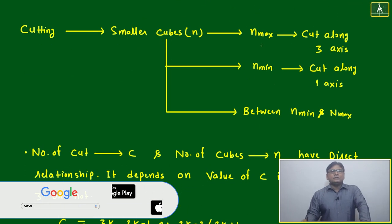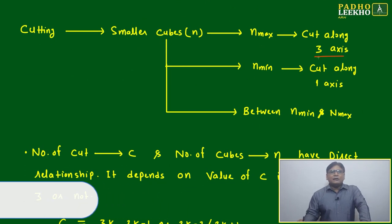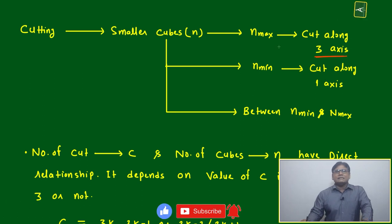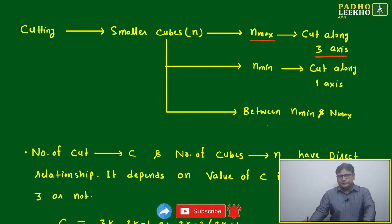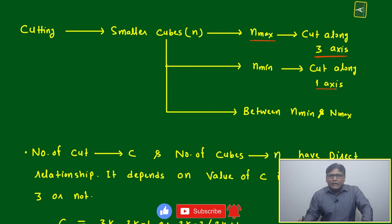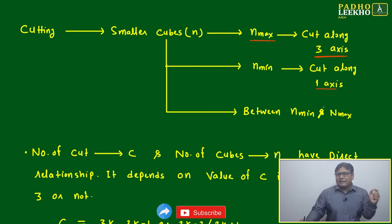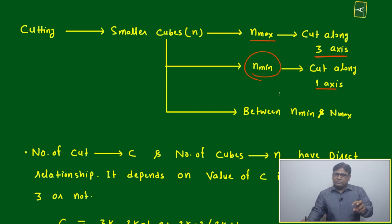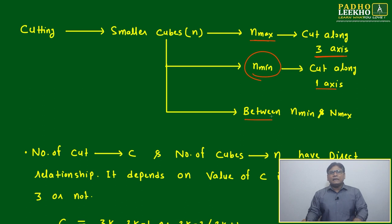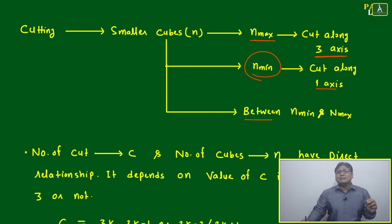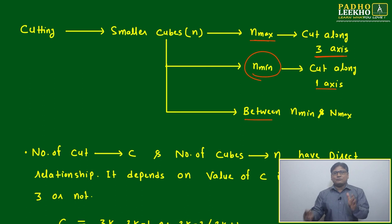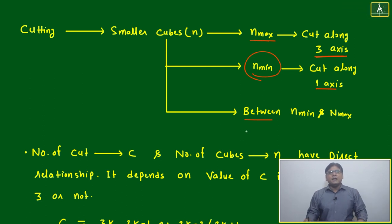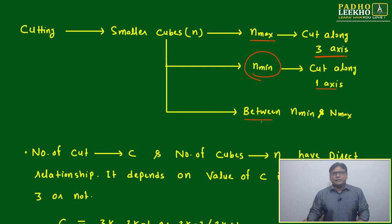If you are cutting to produce smaller cubes, cutting along all three axes gives the maximum number of cubes. Cutting along only one axis — x, y, or z — gives the minimum number. Cutting along two axes gives a result in between the minimum and maximum.